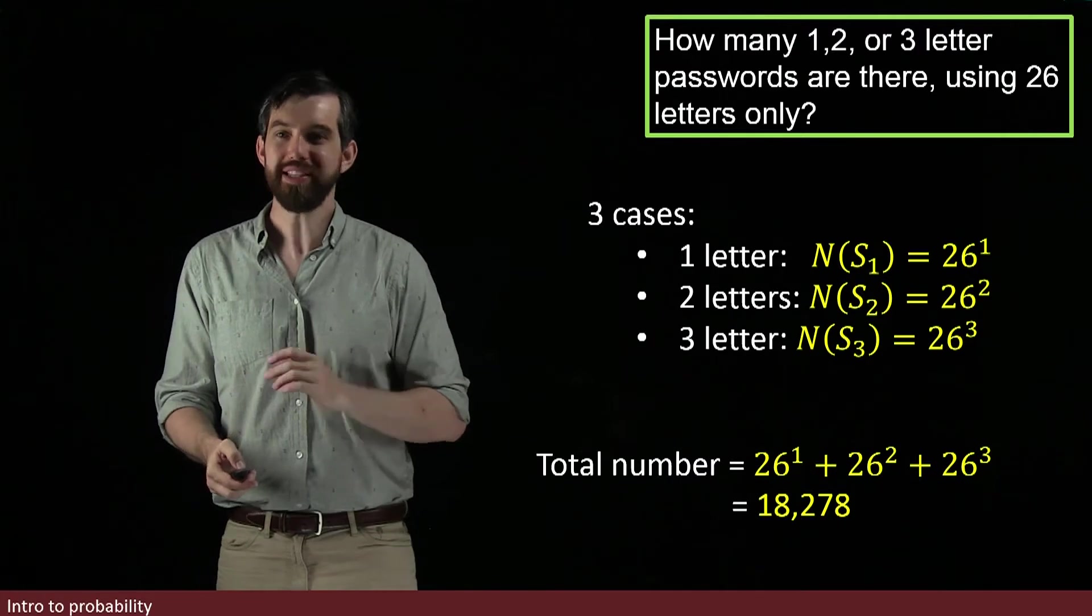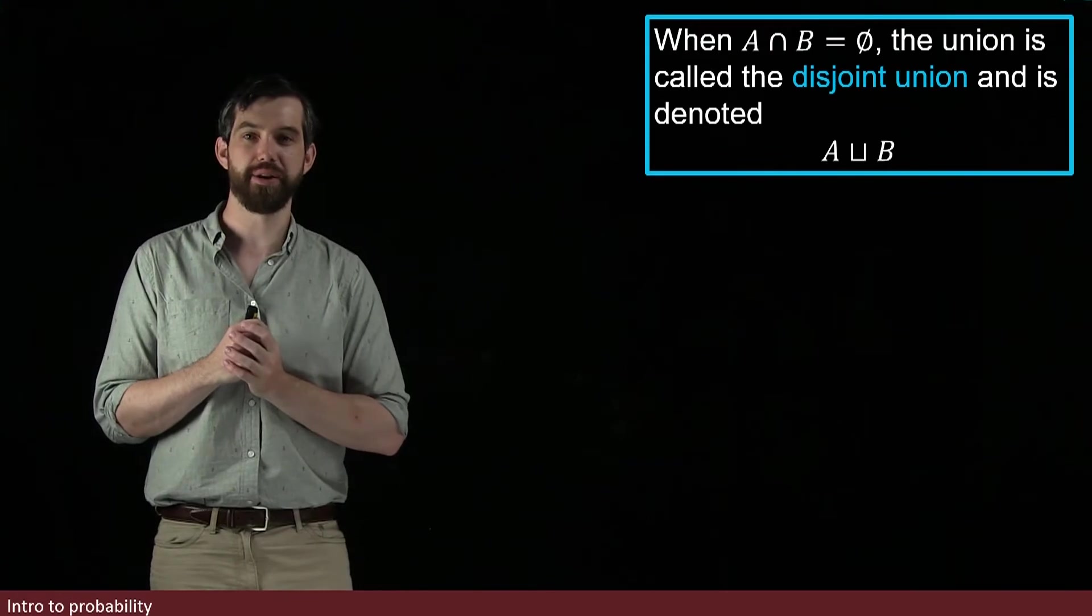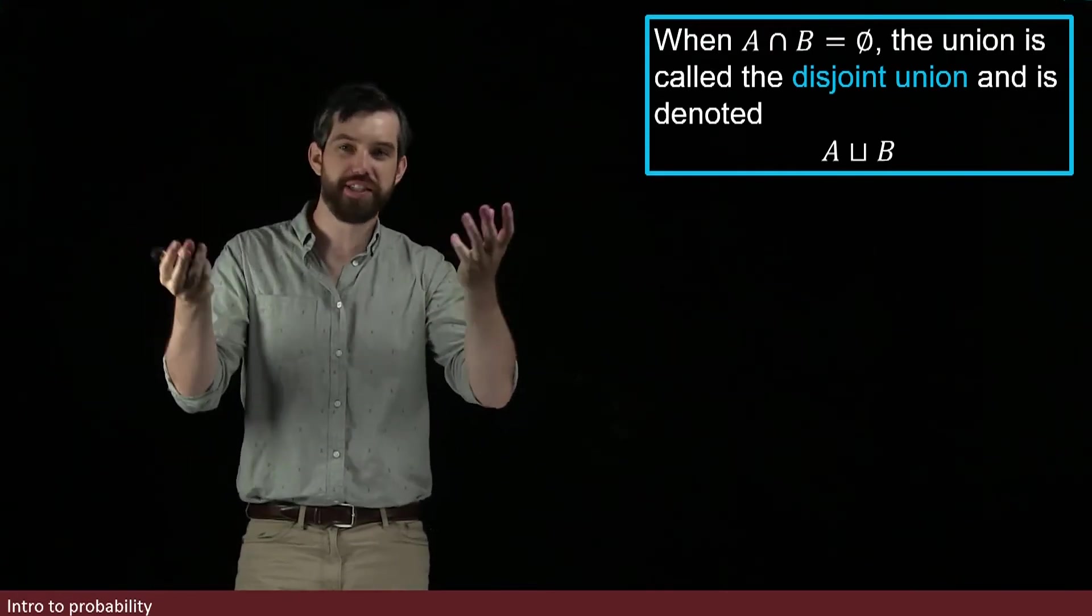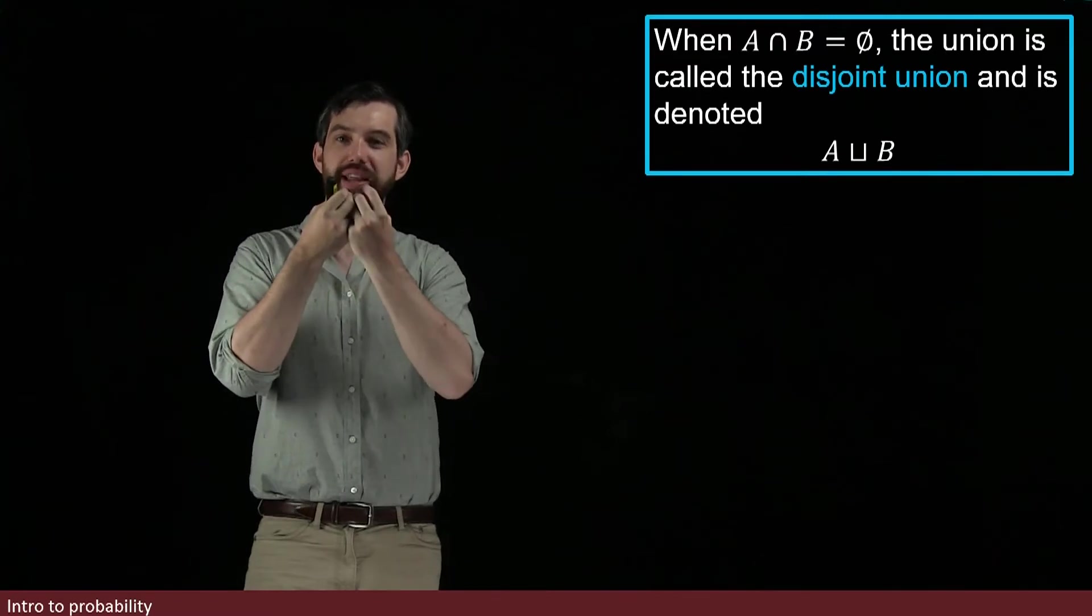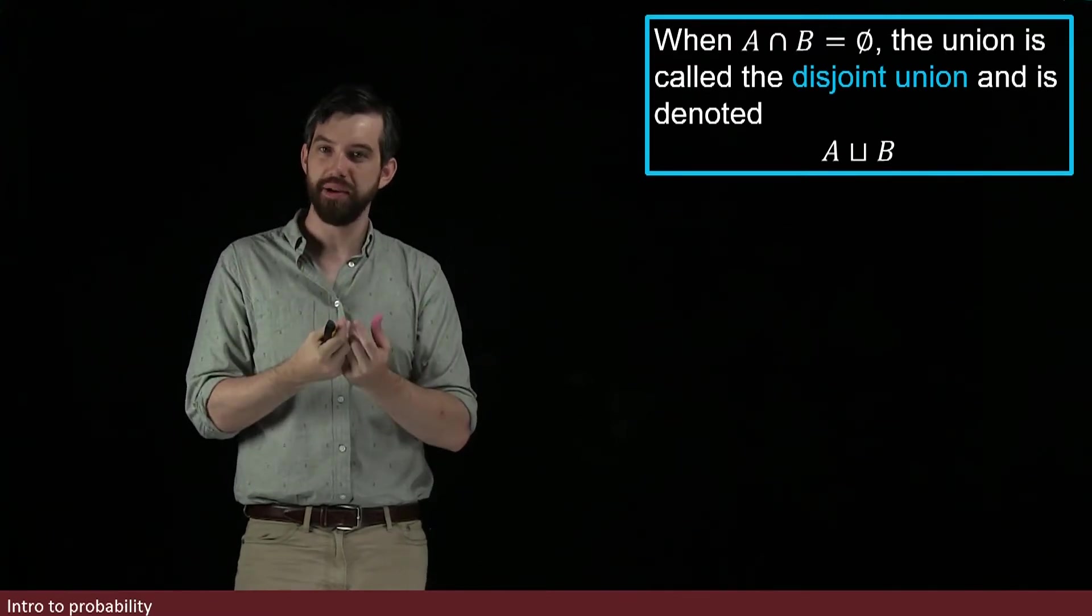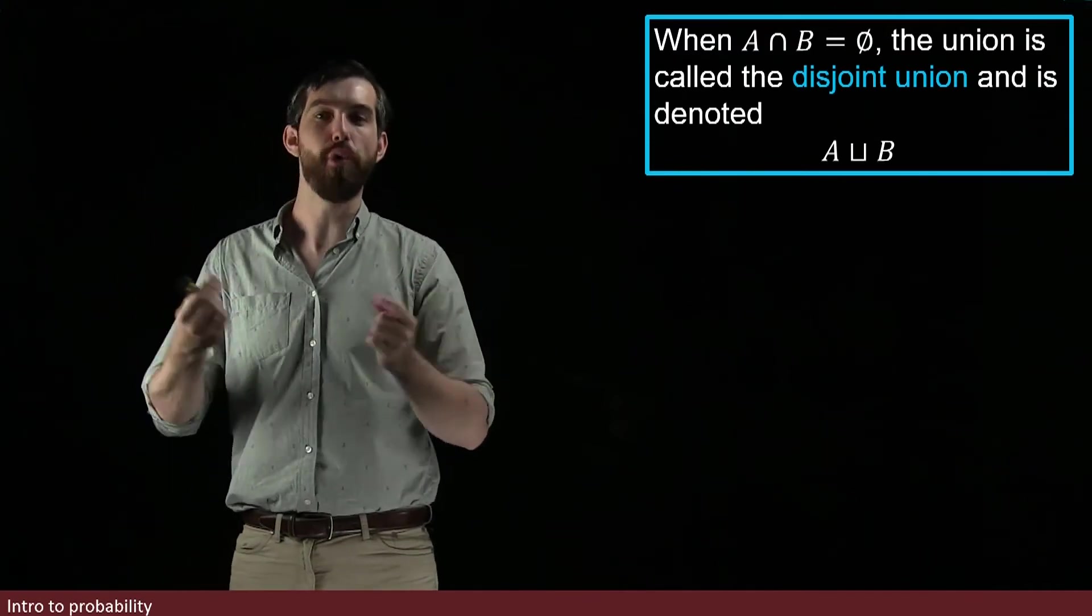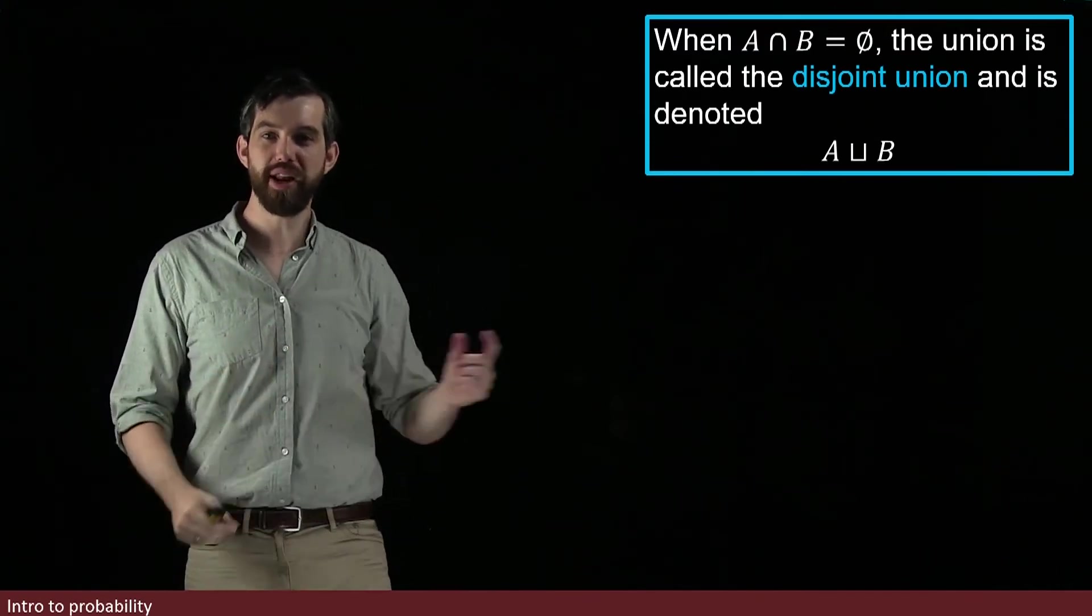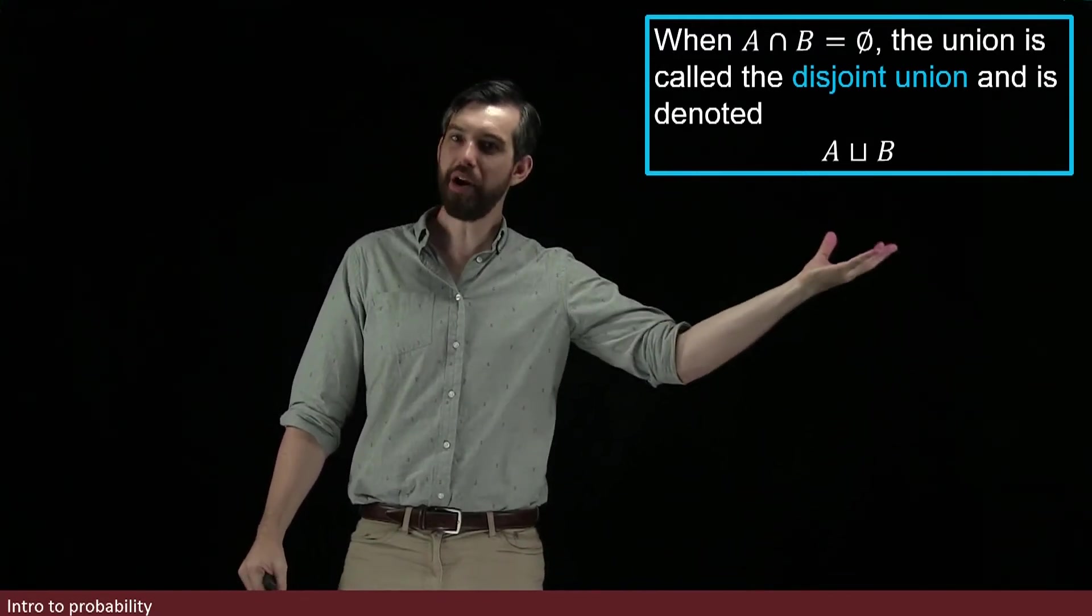This idea is something referred to as disjointness. So, this is something we could have defined back when we were doing set theory, but we're going to define it now because this is when we need it. When you've got two different sets, A and B, and that they don't overlap, that their intersection is empty, we're going to refer to the notion of a disjoint union, and we're going to denote it. It's kind of like the union symbol, but it's squarer. It's like a square union symbol. We call that the disjoint union of A and B.